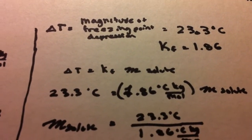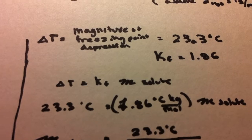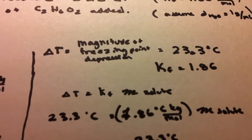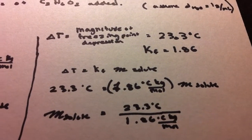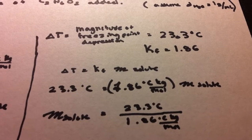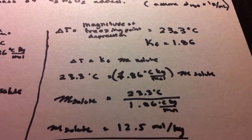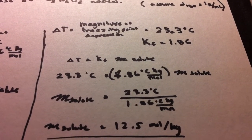So from this, we just apply it to our delta T equation, plug and chug, and we want to find our M solute. M solute in this case would be 12.5 moles per kilogram.